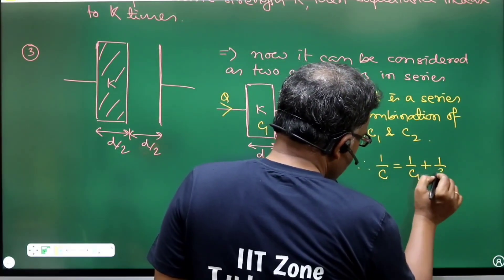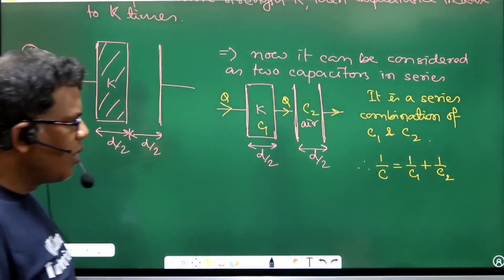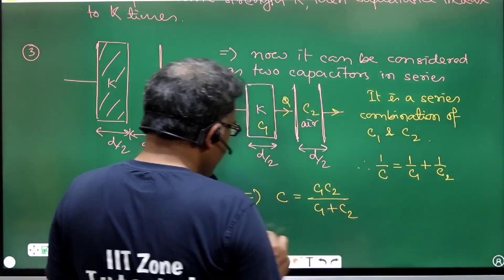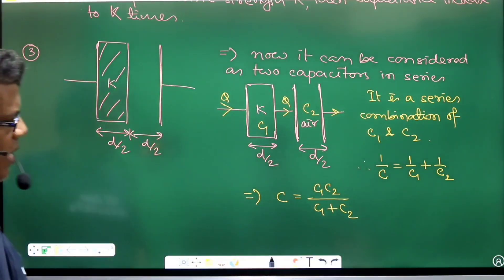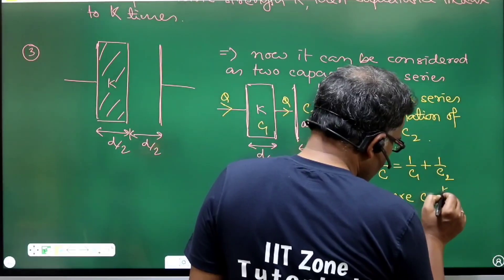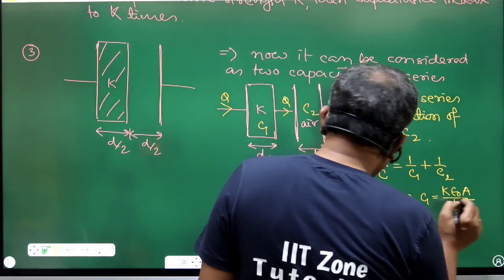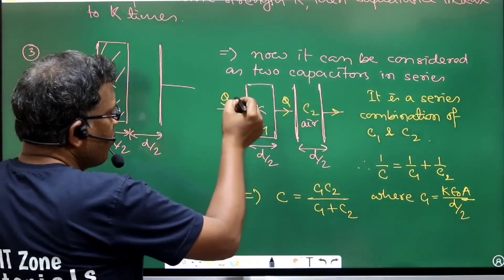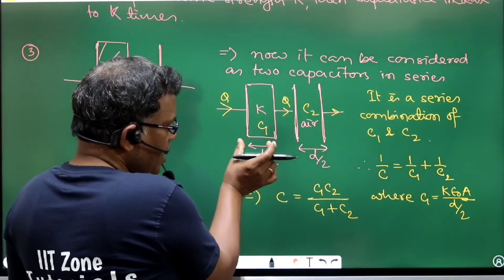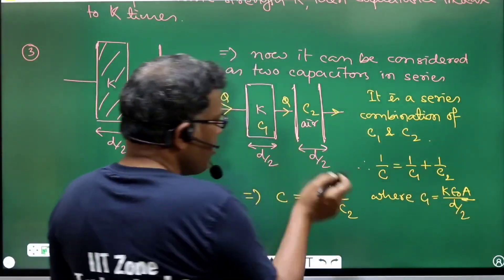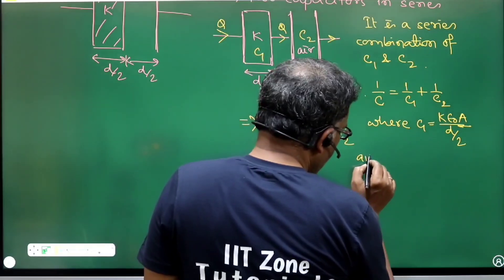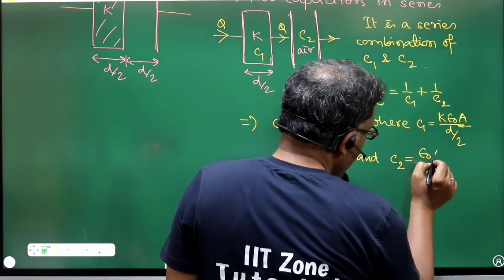For a series combination: 1/C_eff = 1/C1 + 1/C2, which gives C_eff = C1·C2 / (C1 + C2). Here C1 = kε₀A / (d/2) = 2kε₀A/d, and C2 = ε₀A / (d/2) = 2ε₀A/d.